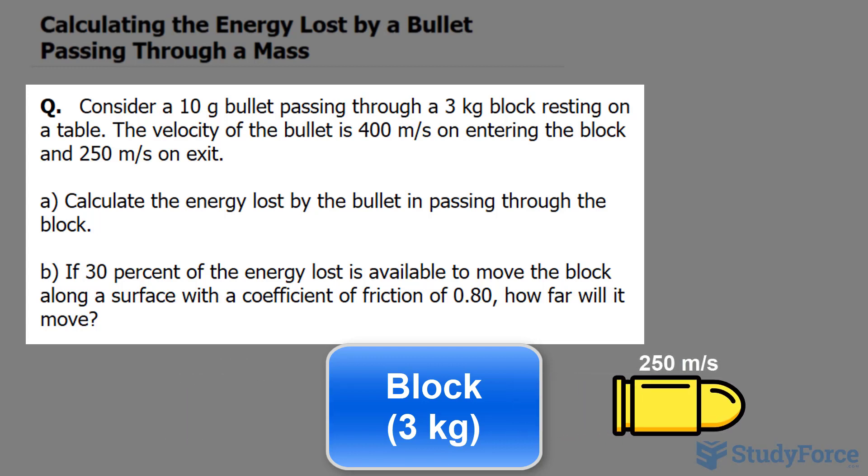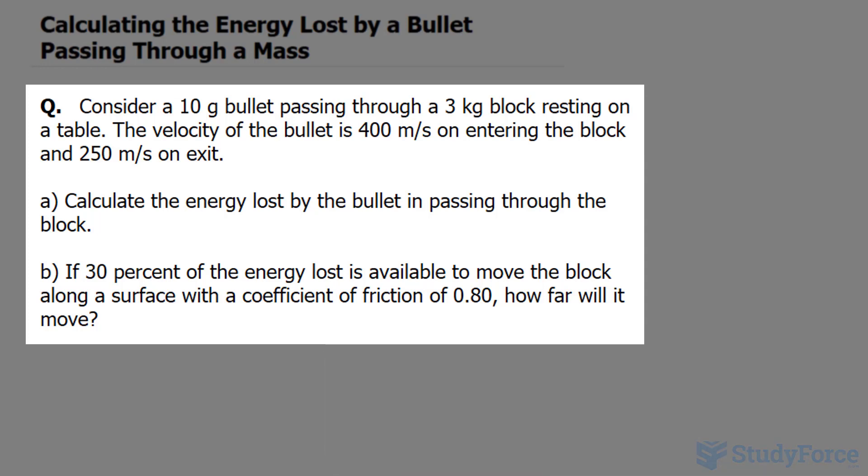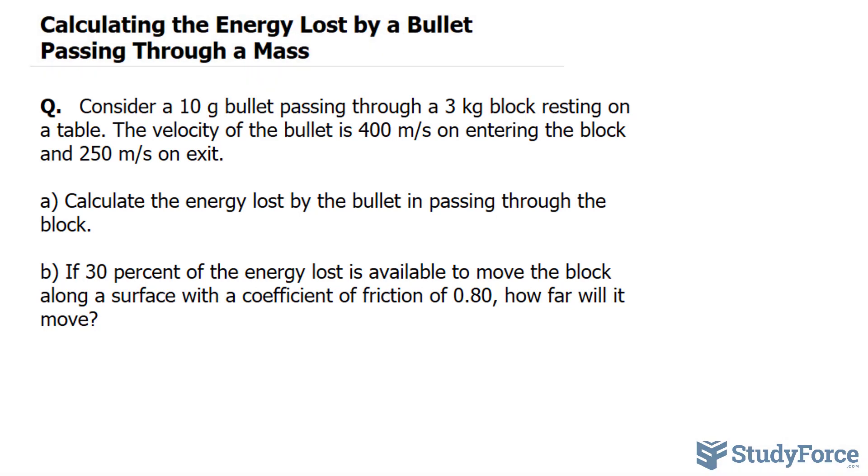For the first part, calculate the energy lost by the bullet in passing through the block. And in part B, if 30 percent of the energy loss is available to move the block along the surface with a coefficient of friction of 0.80, how far will the mass move?